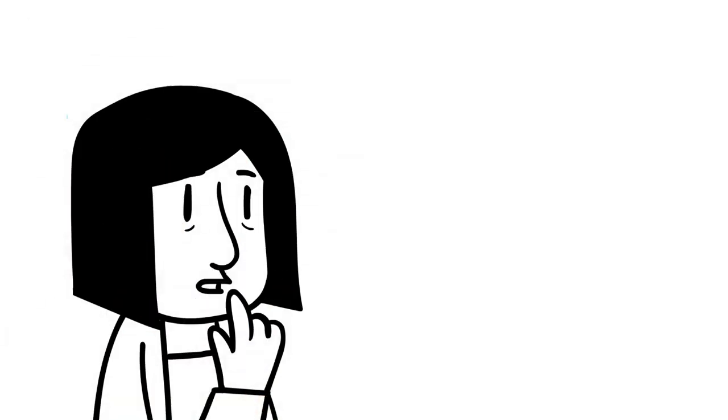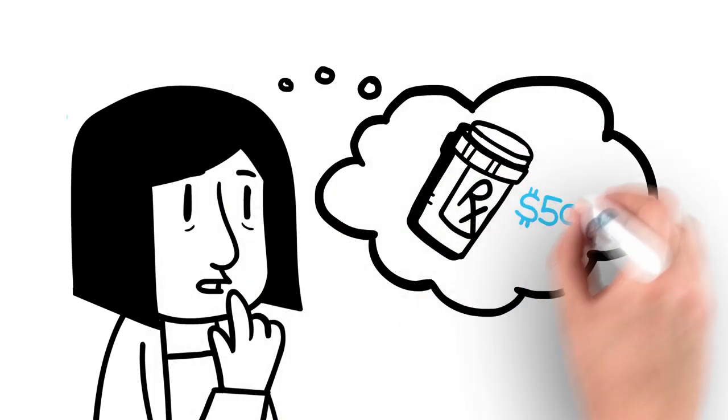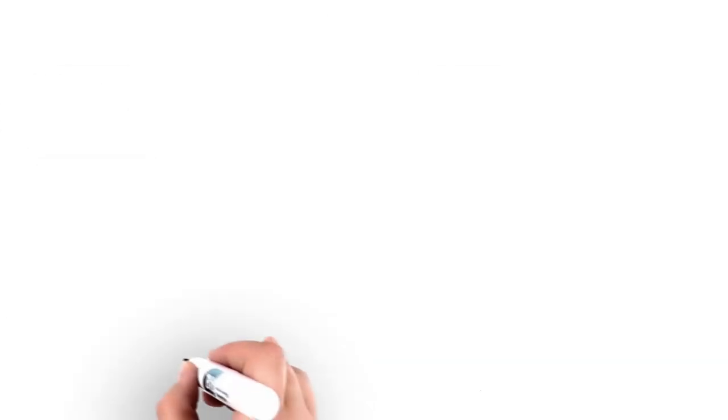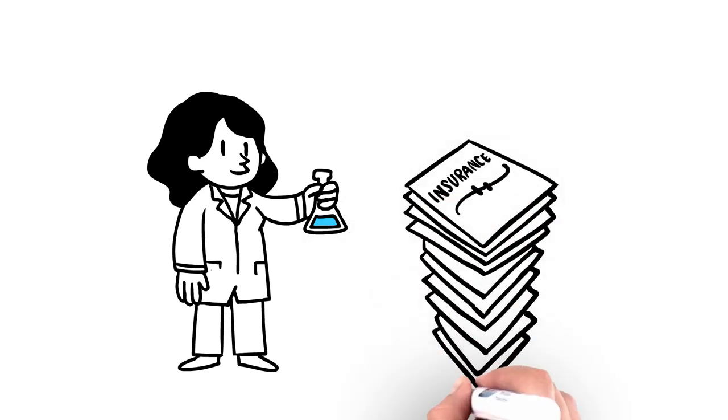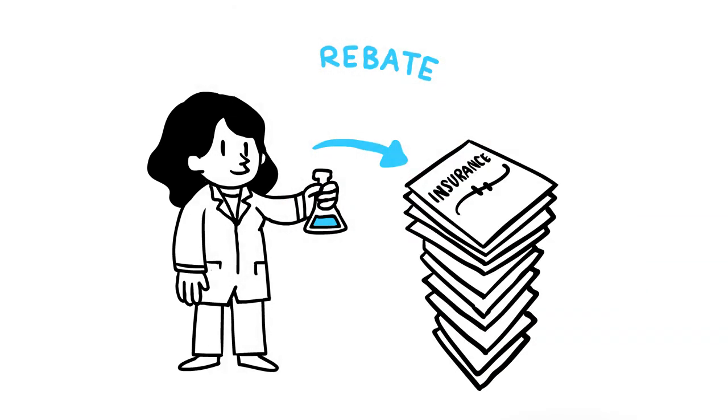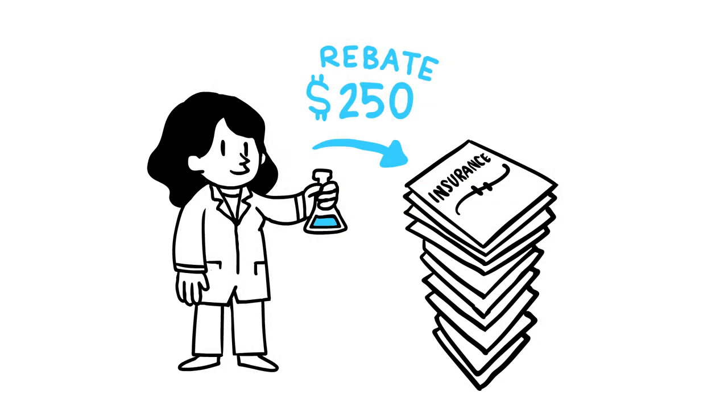What does this mean for Joni? Say that Joni needs a medicine with a list price of $500 per month. The drug maker provides her health plan with a 50% rebate, lowering her drug's net price to $250.